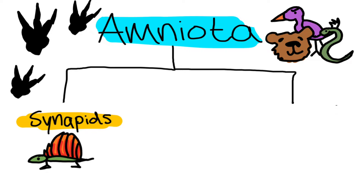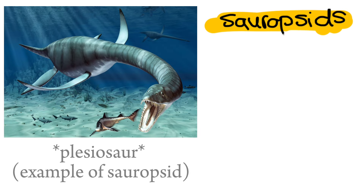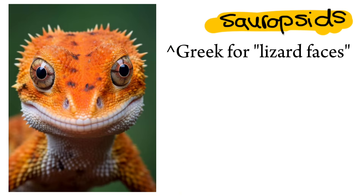The second clade, which we won't be talking about much in this video, is the sauropsids. Sauropsids is actually Greek for 'lizard faces,' and it's broadly equivalent to the class Reptilia, although it's typically used in a broader sense to include extinct stem group relatives of modern reptiles and birds.